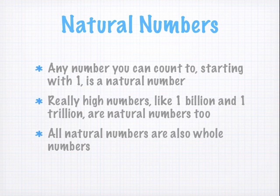Let's start with natural numbers. I want you to start counting, starting with one. When you count like this, you're counting natural numbers. Any number you can count to, starting with one, is a natural number. That includes really high numbers too, like a billion and a trillion, because if you kept counting long enough you'd get to a billion or a trillion. Natural numbers are a big set, but as long as you can remember it's just numbers you can count to, or numbers you could count to if you counted long enough, you've got the idea.